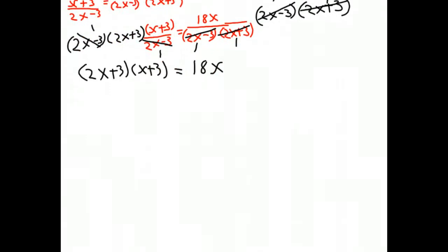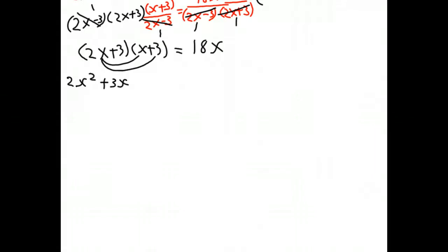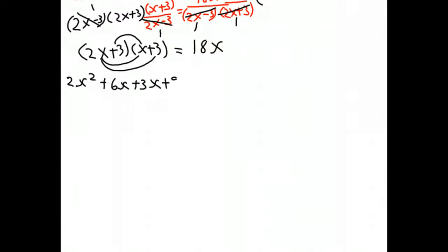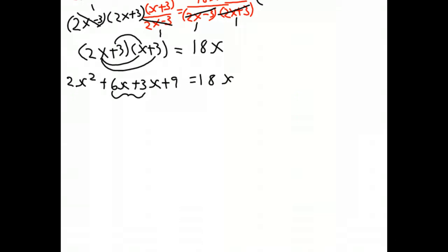Let's give ourselves some more room and multiply out all these factors. Using FOIL, we say 2x times x is 2x squared. 2x times 3 is 6x. 3 times x is 3x. And 3 times 3 is 9. On the right side, we still have 18x. Let's combine like terms. Notice that we have 6x and 3x, so we get 9x there. 2x squared plus 9x plus 9 equals 18x.